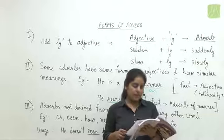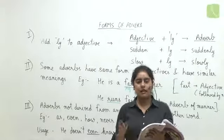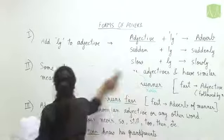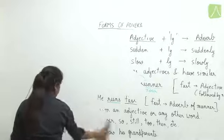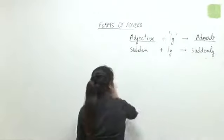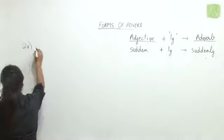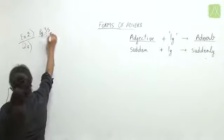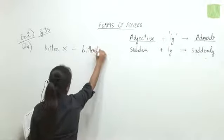Next are subjective questions where we correct sentences and give reasons. Question nine: 'It was bitter cold.' This is wrong. The correct sentence is 'It was bitterly cold.' 'Bitter' is an adjective; we need its adverb form, which is 'bitterly.' So 'bitter' is incorrect and 'bitterly' is correct.